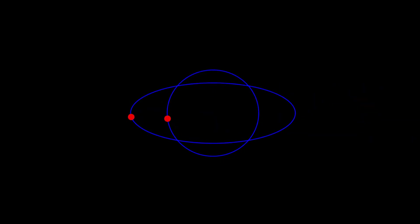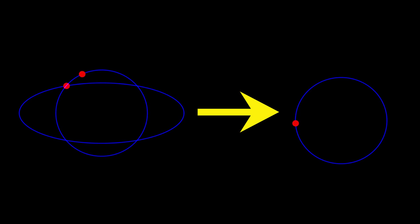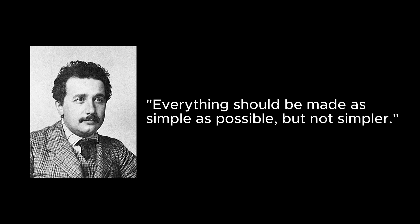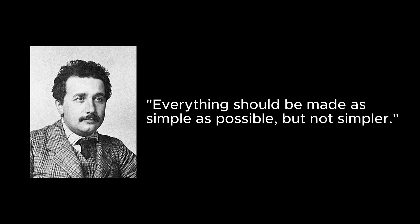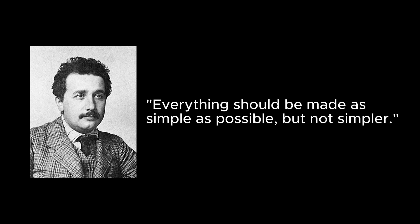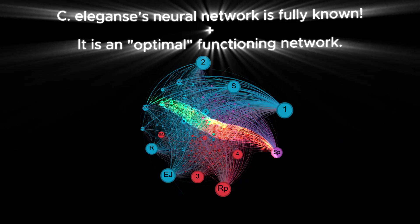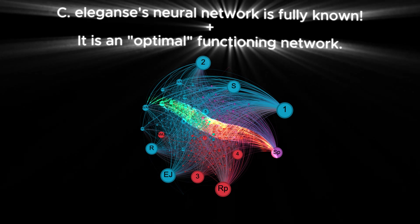One common approach among scientists to solve complex problems is to first study a simpler, more accessible system that shares the same core as a more complicated system. Einstein once said, everything should be made as simple as possible, but not simpler. This instruction could guide us in cracking the black box of AI by looking at something as simple as the fully understood neural network of a worm.